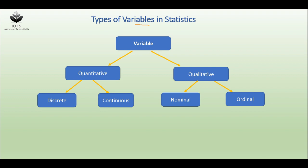Let's see what is variable and what are its types. A variable is any quantity or characteristic that varies from one individual to another. It is also referred to as a data point. In this video, I might use variable or data point interchangeably.